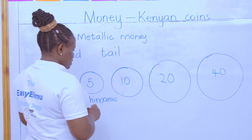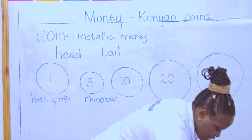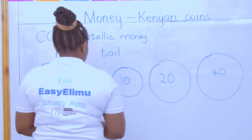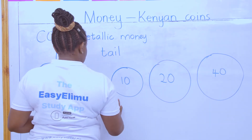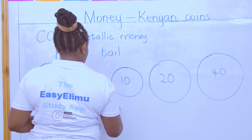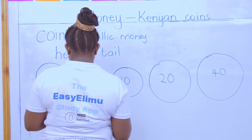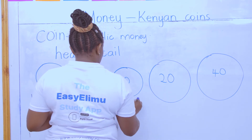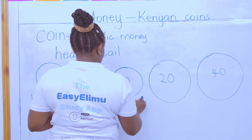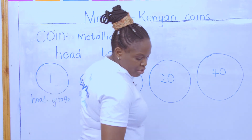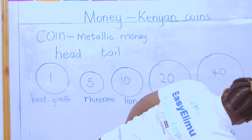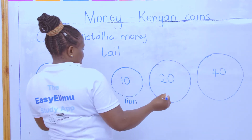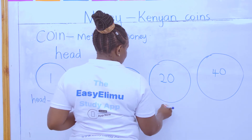What about the 10 shillings coin? The head of the 10 shillings coin has the lion. And the 20 shilling coin — the head has the elephant.